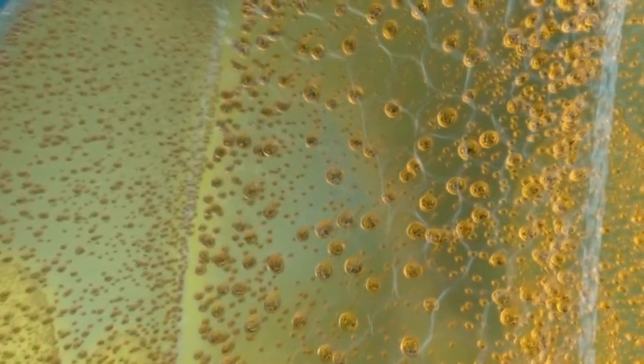The algae that live inside the coral convert sunlight into energy-rich sugars and amino acids. Corals absorb up to 90% of that fuel. In exchange, the algae depend on waste from the polyps as a source of nutrients.